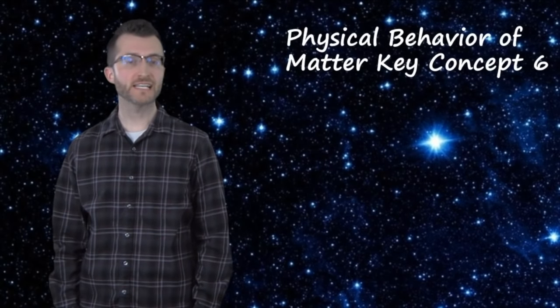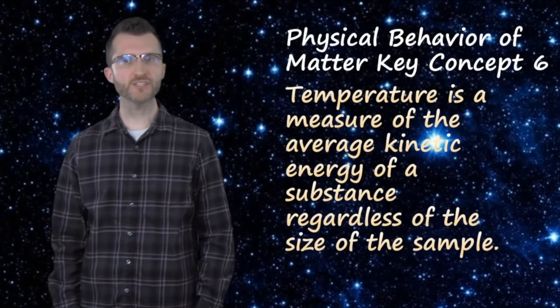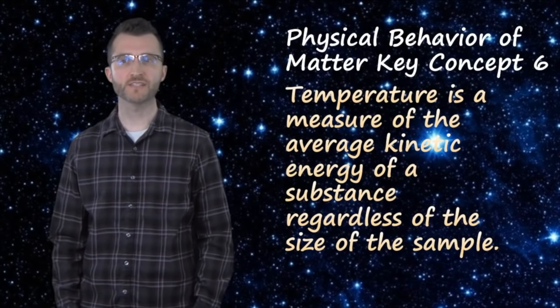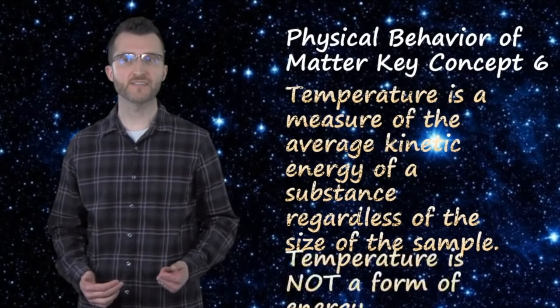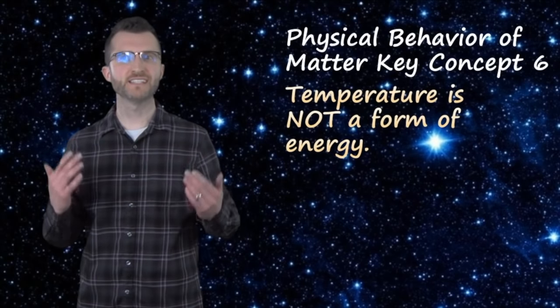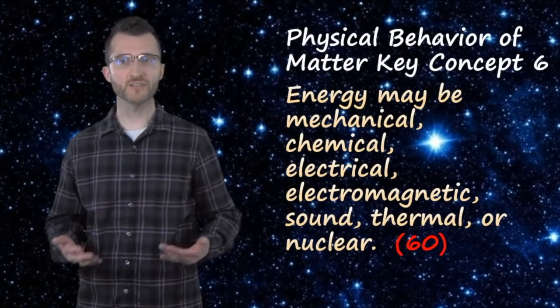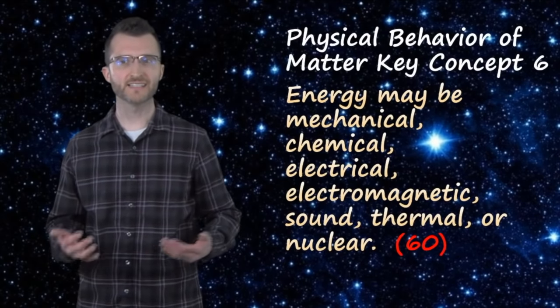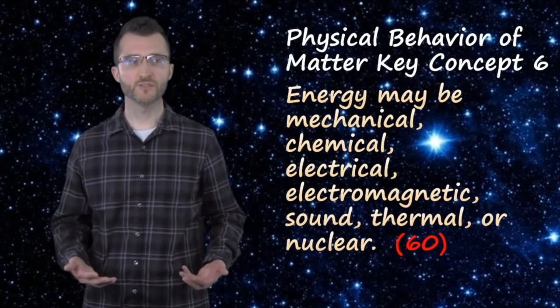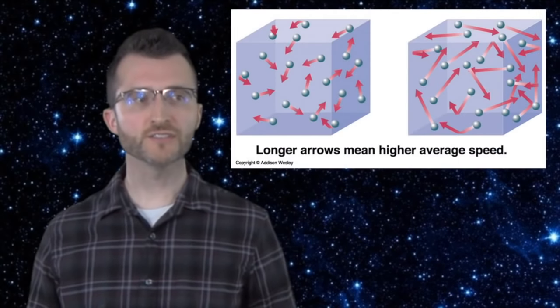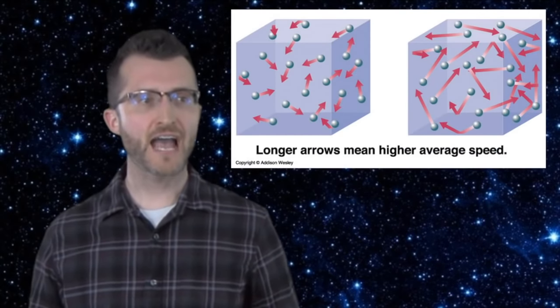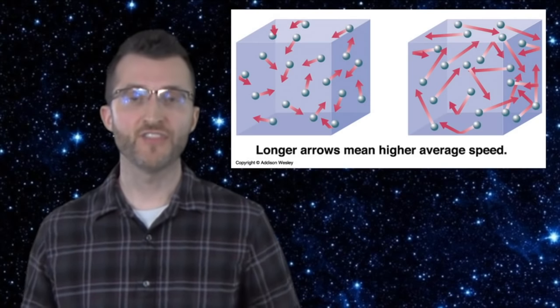Physical behavior of matter, key concept six. Temperature is a measure of the average kinetic energy of a substance, regardless of the size of the sample. Temperature is not a form of energy. Energy may be mechanical, chemical, electrical, electromagnetic, sound, thermal, or nuclear. The faster the motion of particles in a sample of matter, the higher the average kinetic energy, and thus the temperature. It's easy to mix up temperature with other forms of energy, but here's the breakdown of the different types.